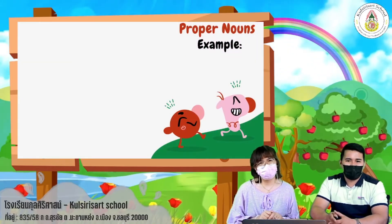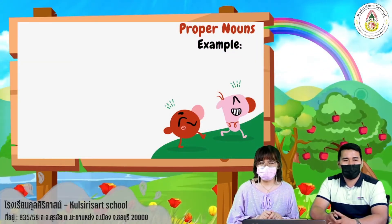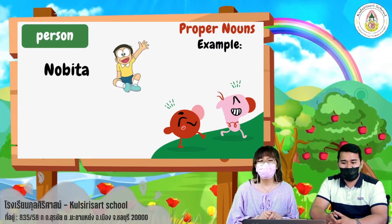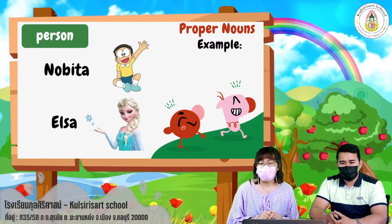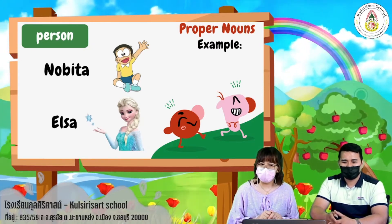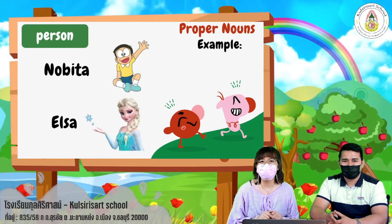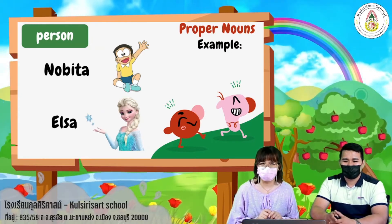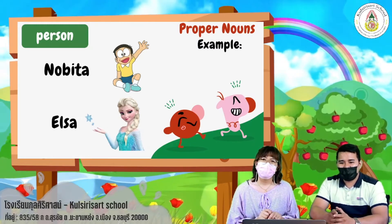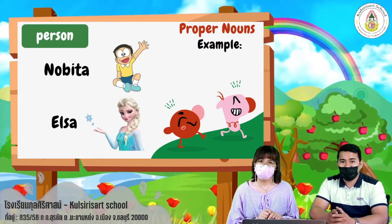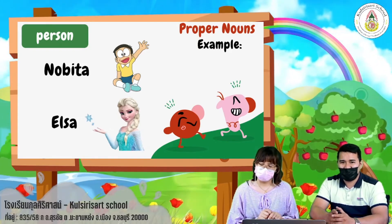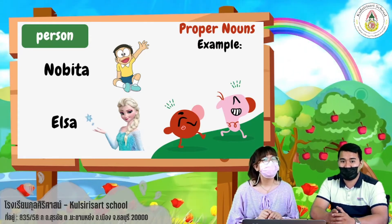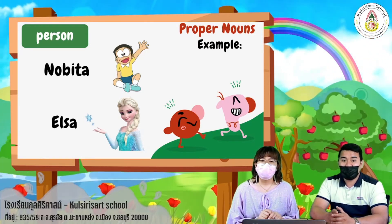We have here some examples of proper nouns. Let's start with person — we have Nobita and Elsa. As you can see, the word Nobita starts with a big letter N, and the name Elsa starts with a big letter E.